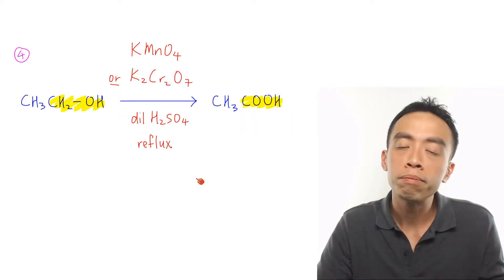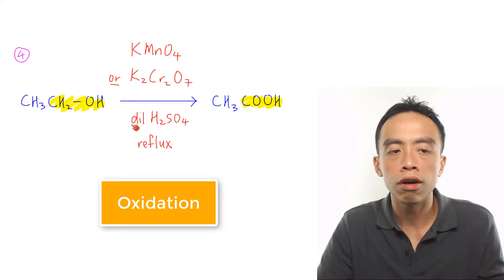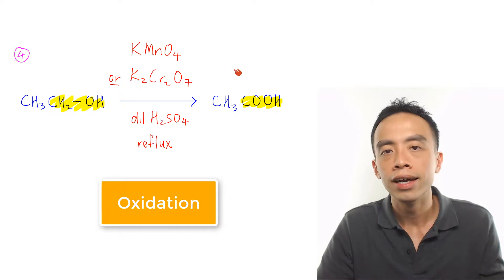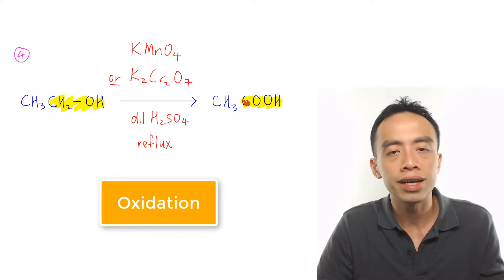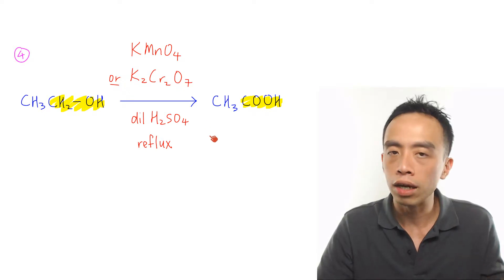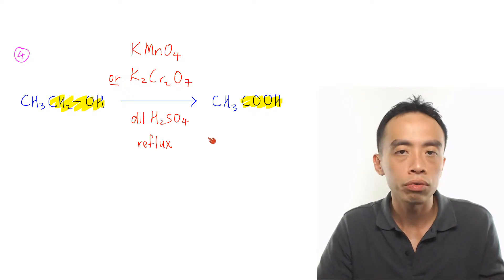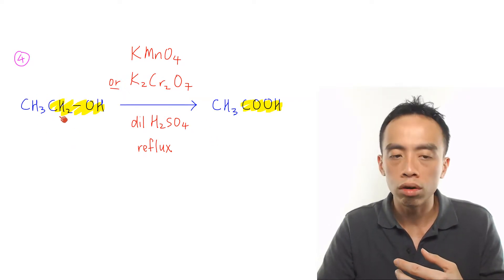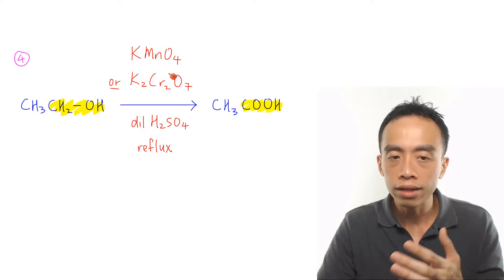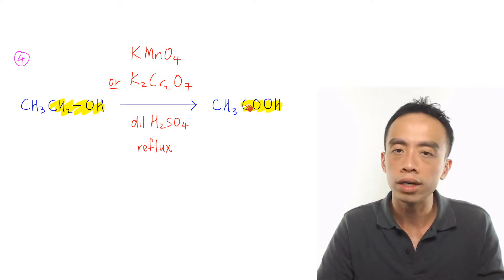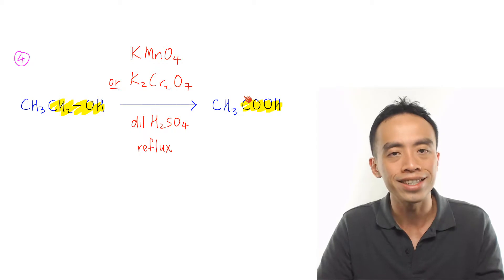The fourth major reaction is the oxidation of primary alcohols to form carboxylic acids. This reaction is done using KMnO4 or K2Cr2O7 in dilute H2SO4 under reflux. Take note: if you have a secondary alcohol under these same reagents and conditions, you will end up with a ketone instead of a carboxylic acid.